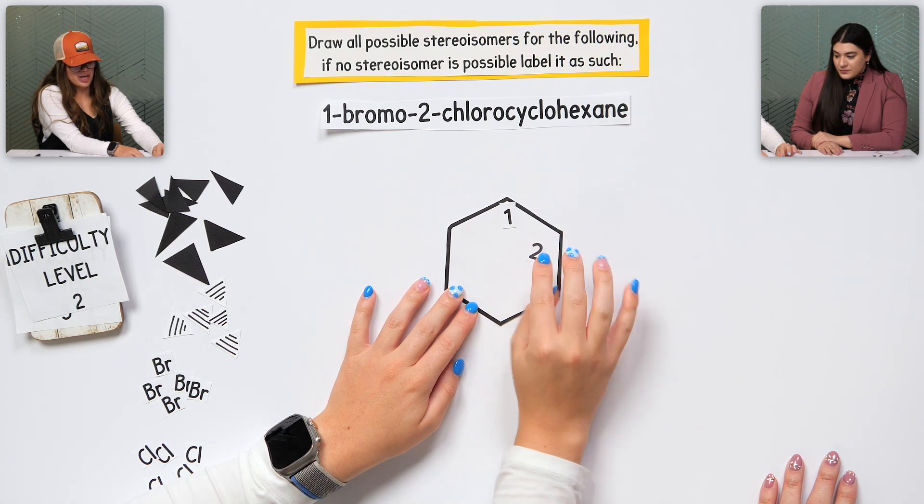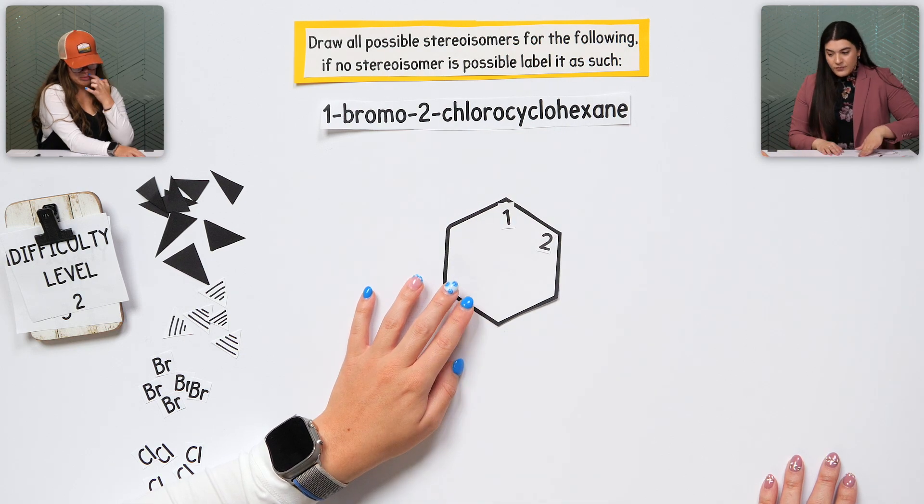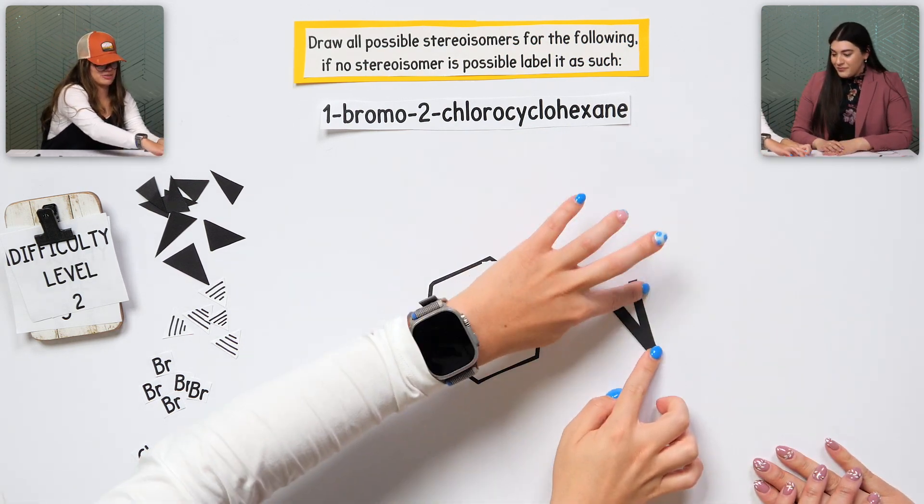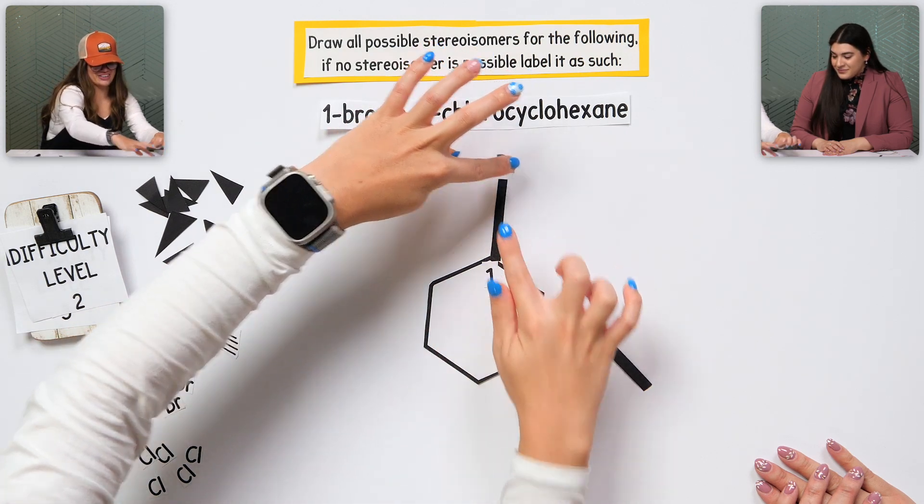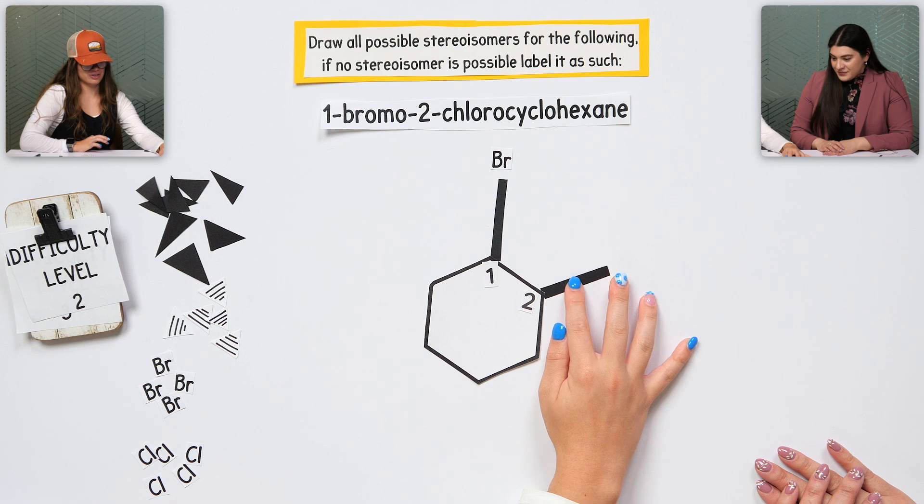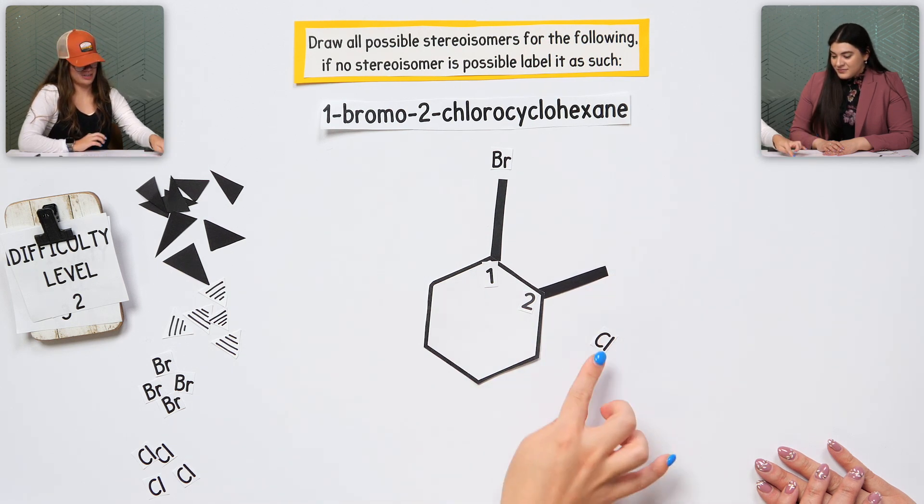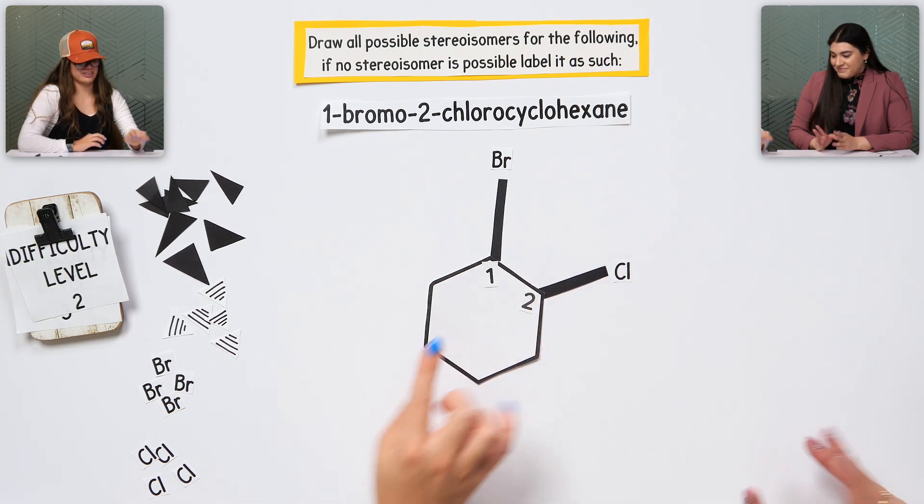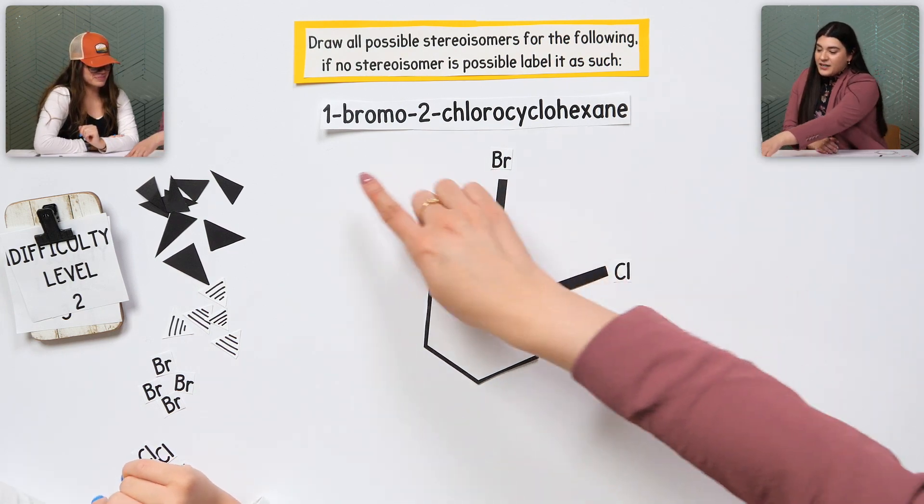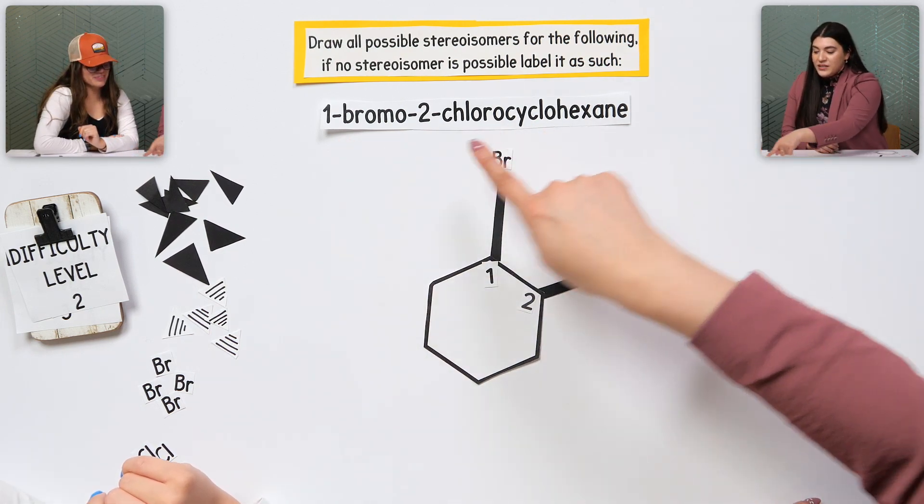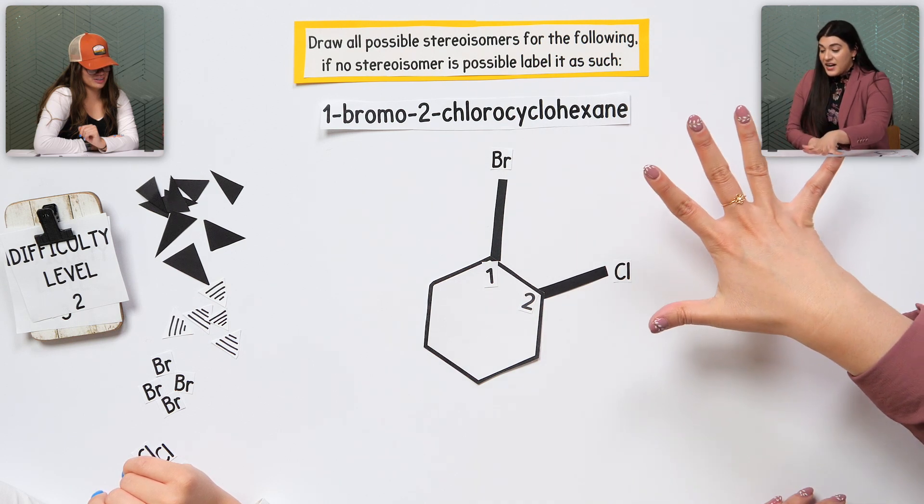But on the one, there's a bromo, so like a bromo. And then on the two, there's a chloro. Good. Cyclohexane. Like this. Exactly. That's six. We know this is six. I know that one, bromo means bromine, two, chloro means chlorine. That's exactly correct.